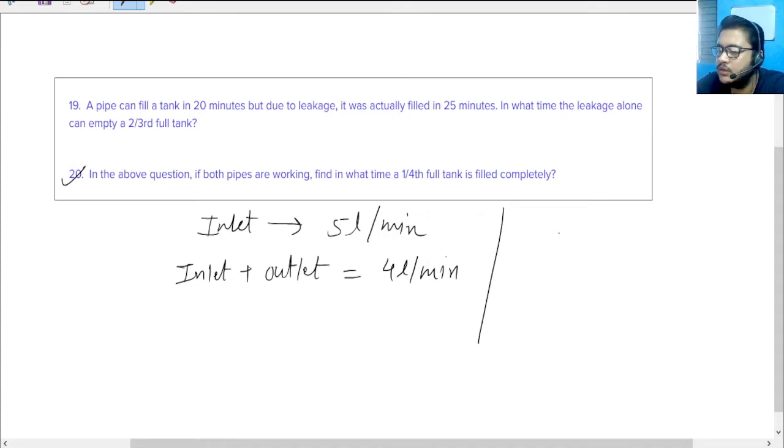So the time taken to fill it will be 100 by 4 divided by 4, because 100 by 4 is the one-fourth of the capacity of the tank. You can take x also instead of 100. This is the capacity. Divide that by 4 will give me the time.